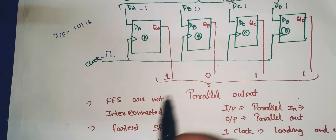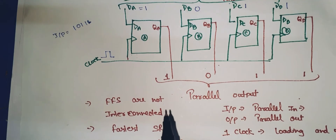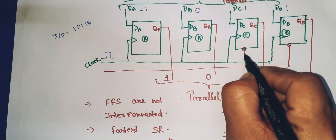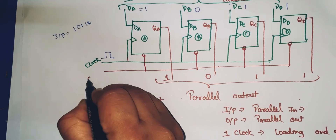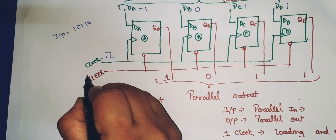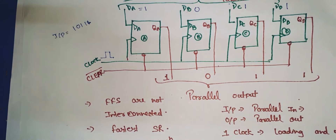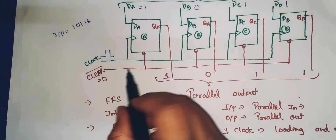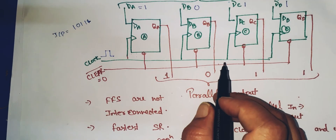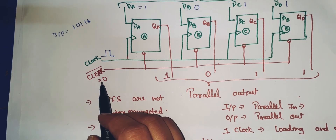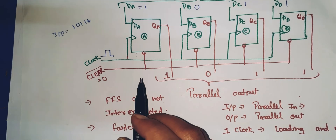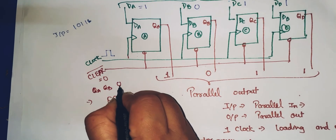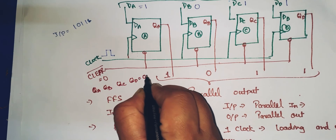You can initialize all flip-flops at the same time by using the asynchronous input clear. If we connect clear to all flip-flops — this is the clear bar, which is an active low signal — if we set clear bar equal to 0, then all flip-flops will reset, meaning all flip-flop outputs will be equal to 0, 0, 0, 0.